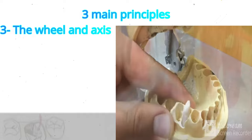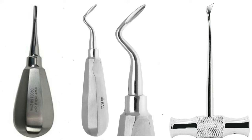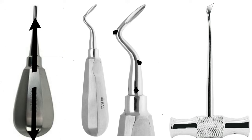The shape of the blade differs for each elevator type, and each is used as the need dictates. There are three main types of elevators used today in oral surgery: the straight elevator, the pair of double-angled elevator, and the pair of elevators with T-shaped or crossbar handles.